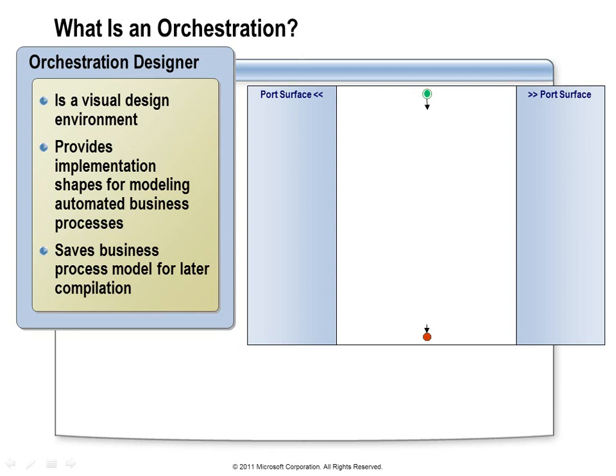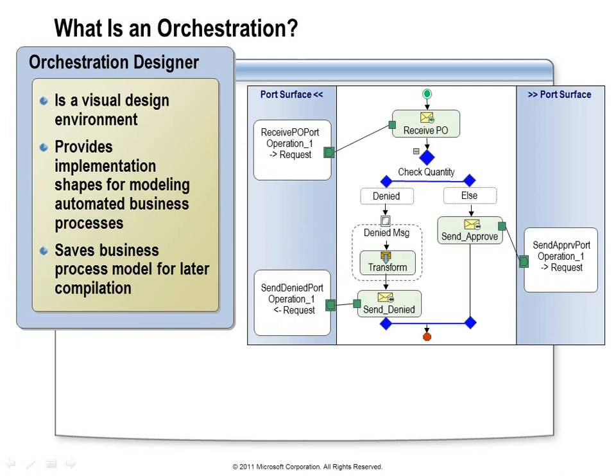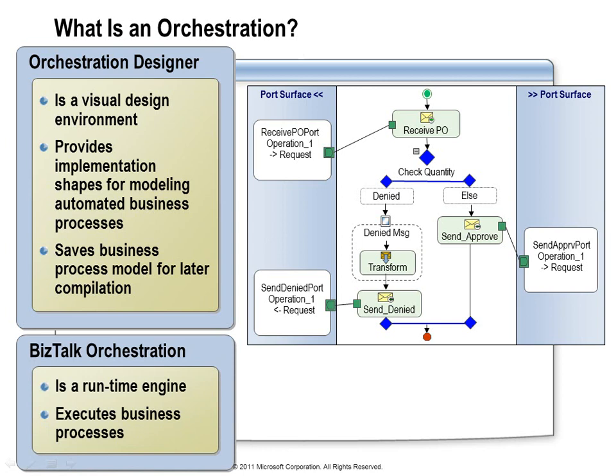Orchestrations — what exactly is an orchestration? At some level, an orchestration is a diagram of a business process. The orchestration designer offers a toolbox full of shapes you can use to map out your business process. As you add those shapes to your design surface, you can set properties on them and configure them to meet the needs of your application. Once you have everything configured, you can hit the build button in Visual Studio. Visual Studio will take all of the information you provided in the orchestration designer and compile it into a .NET class, which you can then deploy to your BizTalk server environment.